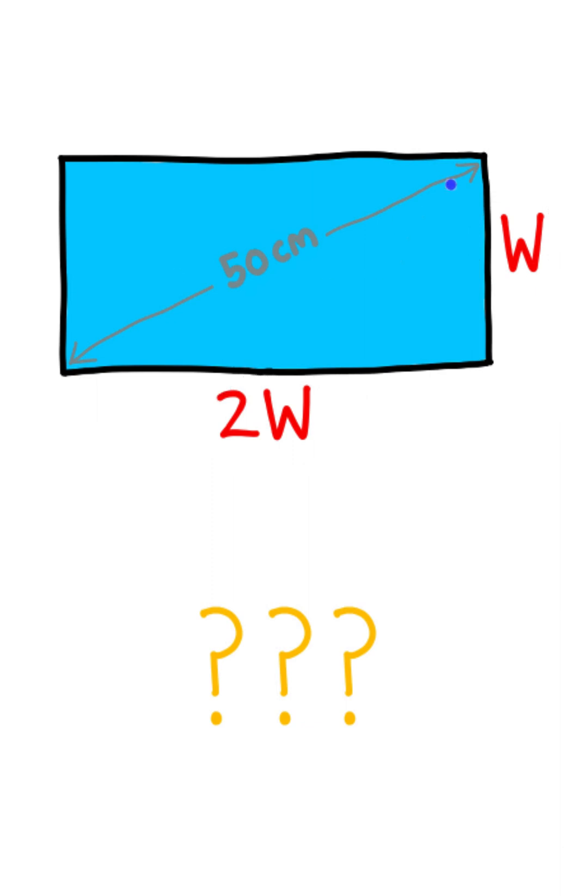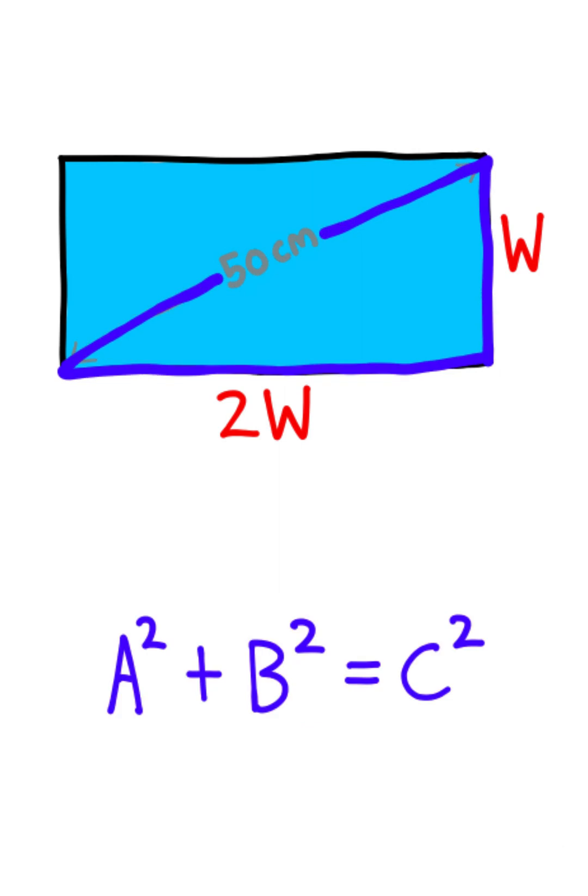All you need to do is recognize that a right triangle forms with this window. We can just use the Pythagorean theorem, which says that a squared plus b squared equals c squared.